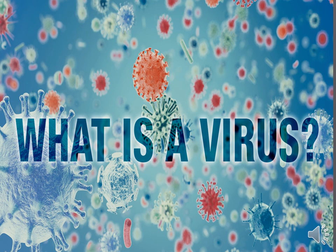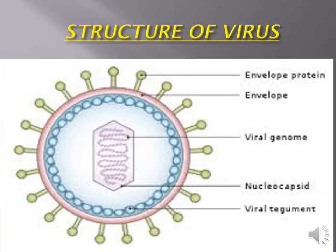We now move on to Virus Structure. A virus contains a core of DNA or RNA, which is surrounded by a protein coat. In some viruses, the protein coat is covered by an envelope made up of proteins, lipids, and carbohydrates. The envelope has spikes that help the virus particles attach to the host cells.